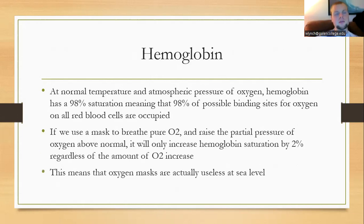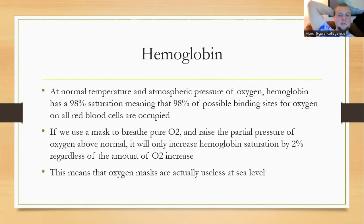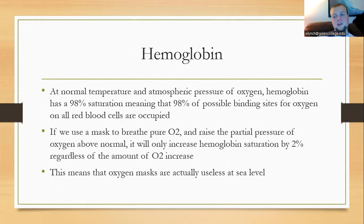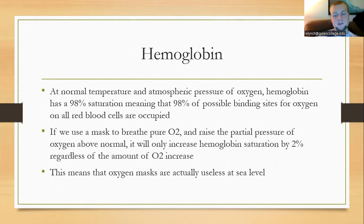Oxygen transport in the blood is primarily by hemoglobin. Normally, hemoglobin is almost saturated — roughly 98-99%. That means 98% of possible heme group binding sites are occupied during arterial blood flow. If using an oxygen mask to breathe pure oxygen at 98% saturation, we could only increase saturation by 2% at maximum. So regardless of how pure the oxygen we breathe, hemoglobin binding can only increase by 2%, making oxygen masks largely ineffective at sea level.